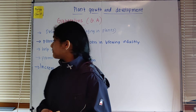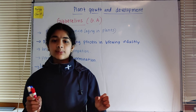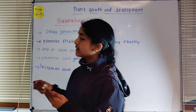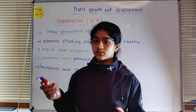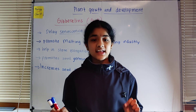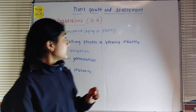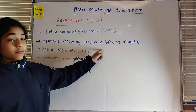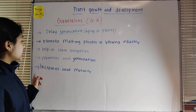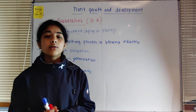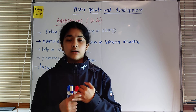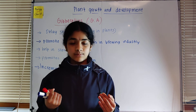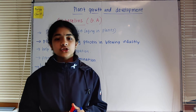In summary, gibberellins are phytohormones and promoters, derivatives of terpenes, discovered by E. Kurosawa through the bakanae (foolish seedling) disease of rice caused by the fungal pathogen gibberella fujikuroi. The active substances were identified as gibberellic acids. There are thousands of gibberellins, with GA3 being the most intensively studied. Key functions include delaying senescence, promoting the malting process, stem elongation, seed germination, and increasing seed maturity.